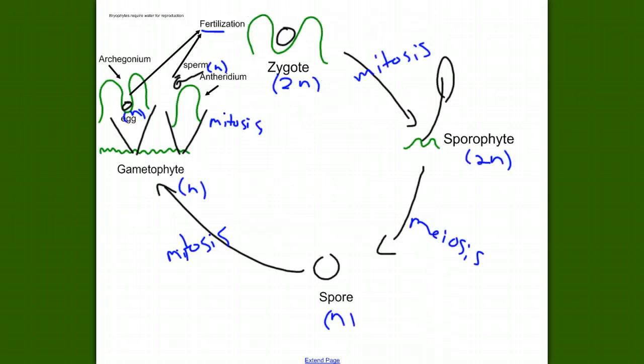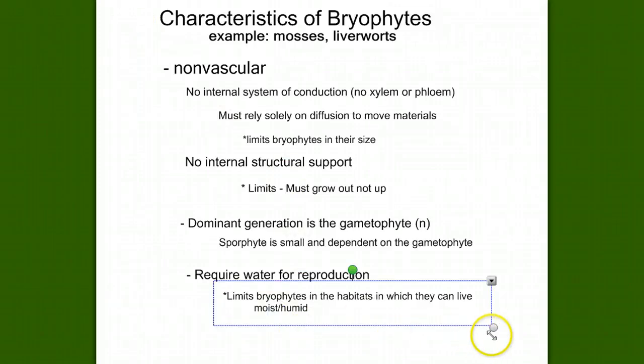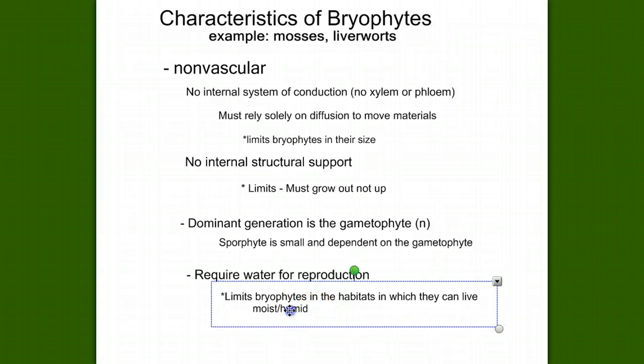What else did we learn? Bryophytes require water for reproduction. In what way does this requirement of water limit mosses? It limits bryophytes to the habitats in which they can live. It must be in a moist, humid habitat where there's enough moisture for the sperm to swim to the egg to complete the reproductive cycle.